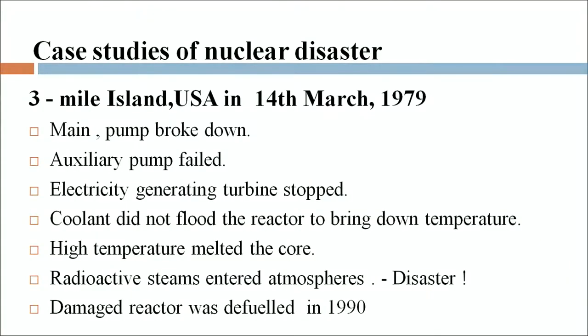Two case studies related to nuclear disaster: First is Three Mile Island, USA, on 14th March 1979. There was a breakdown of the main pump; auxiliary pumps failed to operate and the electricity-generating turbine stopped. Emergency coolant should have flooded the reactor to bring down temperature. The coolant did start to flow but did not cool the reactor, while a faulty meter showed otherwise. The high temperature resulted in core meltdown and radioactive steam was thrown into the atmosphere. Pregnant women and children were removed from the site. It was over a year before anyone could enter the plant, and the damaged reactor was eventually defuelled in 1990.